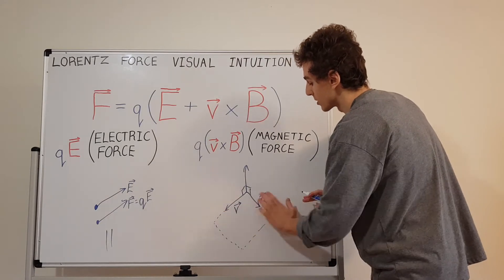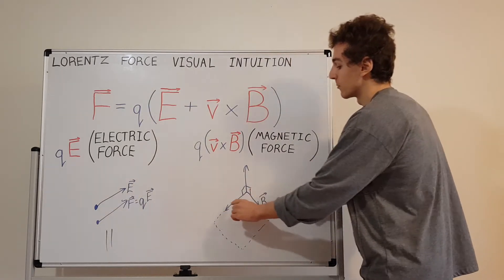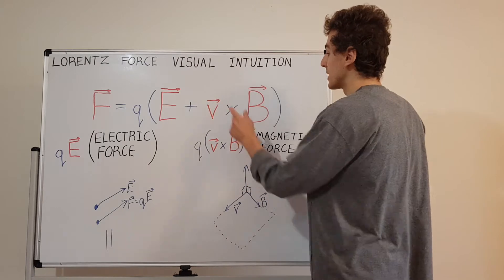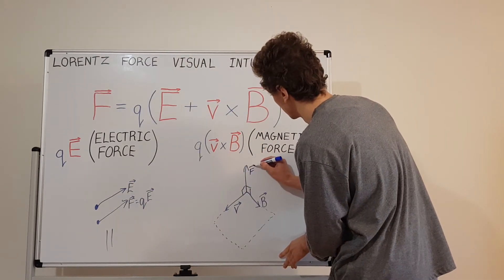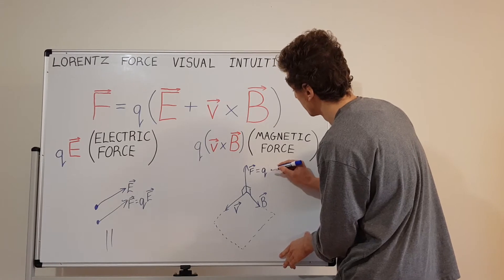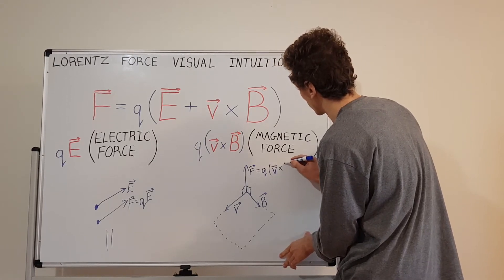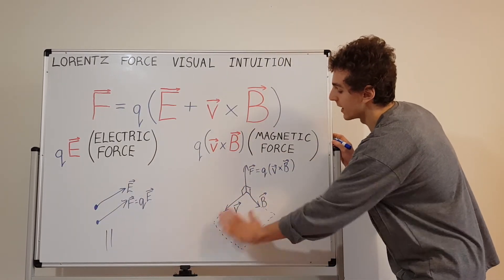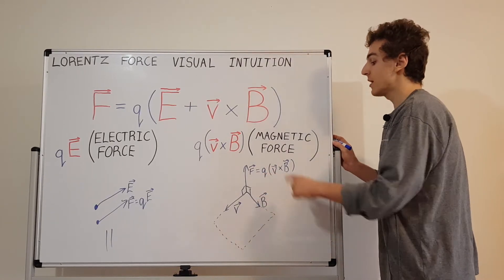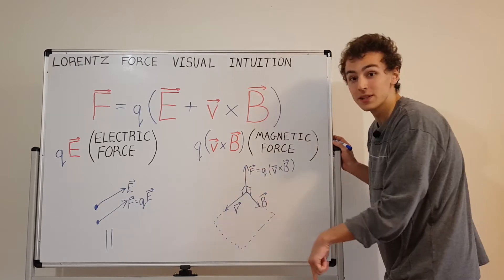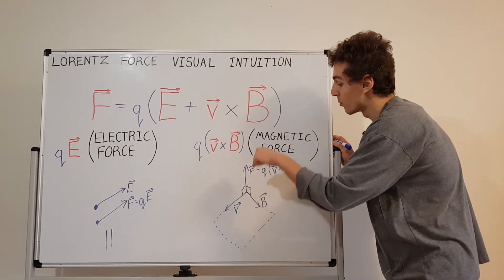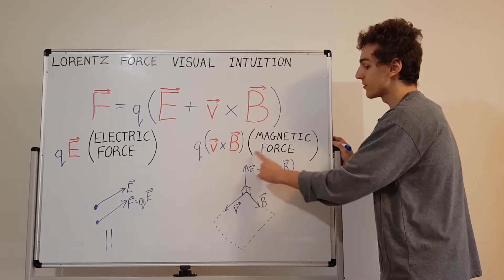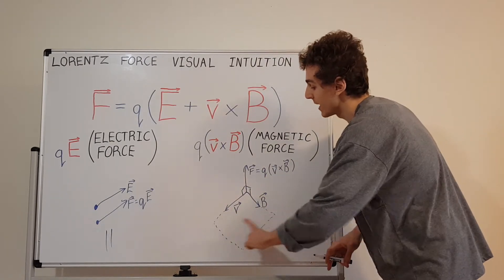If you take the plane spanned by V cross B and scale the area of the parallelogram formed by those two vectors by the charge Q, you get the magnetic force Q times V cross B. V cross B sticks out of the plane that V and B lie in, and it's scaled by the charge. If you have a negative charge, the force points in the opposite direction — below the plane rather than above it.